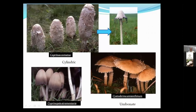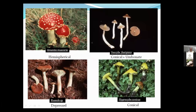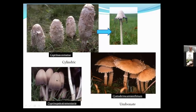The cylindric cap: Coprinus comatus, the shaggy mane, also called the lawyer's wig, is a good edible. As it matures it decomposes into a black goo — a process called deliquescing. Its relative Coprinopsis atramentaria is also a good edible, except it contains disulfiram — the same drug given to alcoholics — which means if you eat it and drink alcohol, you're going to feel very sick. So: good to eat, just don't drink with it.